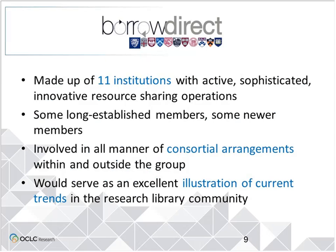BorrowDirect started in 1999 with just three institutions: Columbia, Penn, and Yale. In 2002 they added four more partners: Brown, Cornell, Dartmouth, and Princeton. More recently, in 2011, Harvard and MIT joined. University of Chicago joined in 2013. Just this past summer, Johns Hopkins University signed up, bringing the total to 11 institutions. Duke just joined within the last month but won't be part of the current study. BorrowDirect seemed like a group whose overall collection sharing activity would provide the perfect snapshot of what's going on in the community—really indicative of what's being tried out there and very active, giving a really good look at what's going on among large North American academic institutions. All 11 institutions were willing to provide the statistical data needed to conduct the analysis.